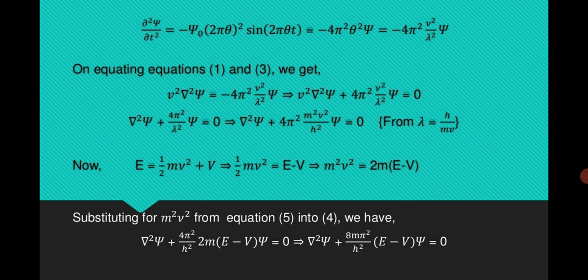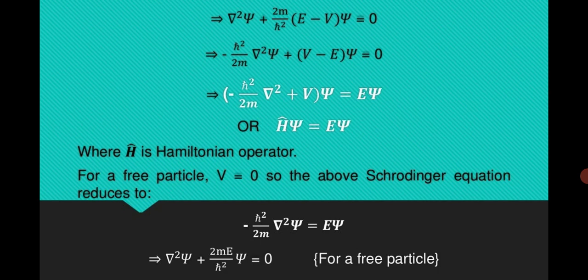Substituting for m²v² in the above equation, our equation becomes: ∇²ψ + (4π²/h²)·2m(E − V)ψ = 0. By rearranging this, we get: ∇²ψ + (2m/ℏ²)(E − V)ψ = 0, which is Schrödinger's time-independent wave equation.